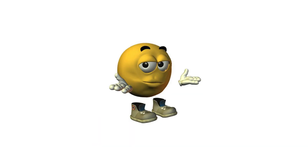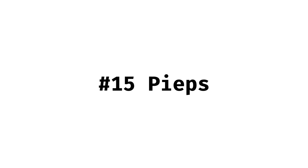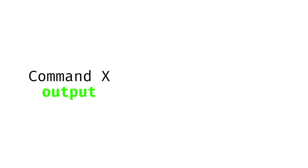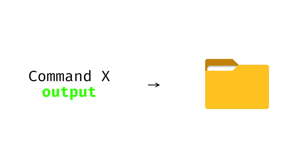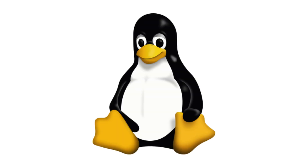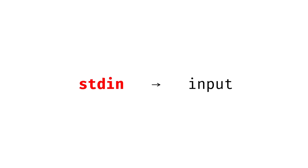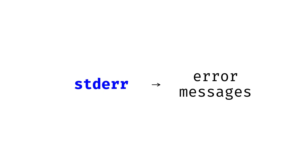You can connect commands together with pipes, sending the output of one command as input to another. And with redirection, you can send output into files or read input from files. This works because Linux treats input and output as standard streams: stdin for input, stdout for normal output, and stderr for error messages.